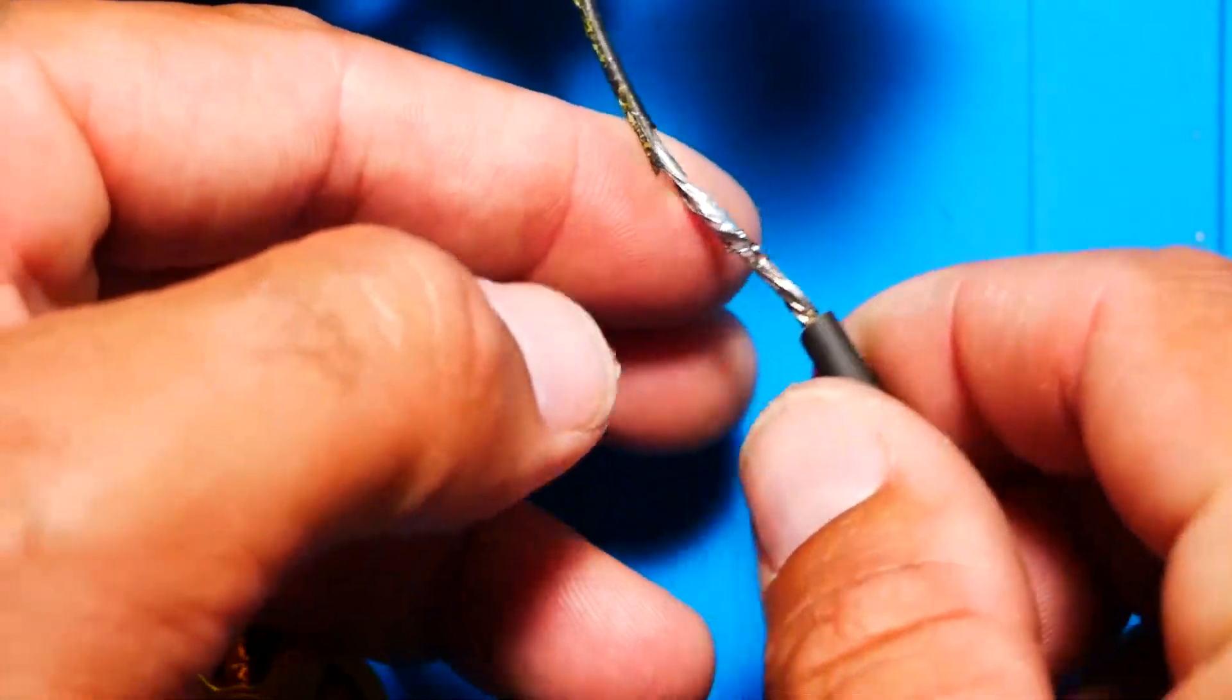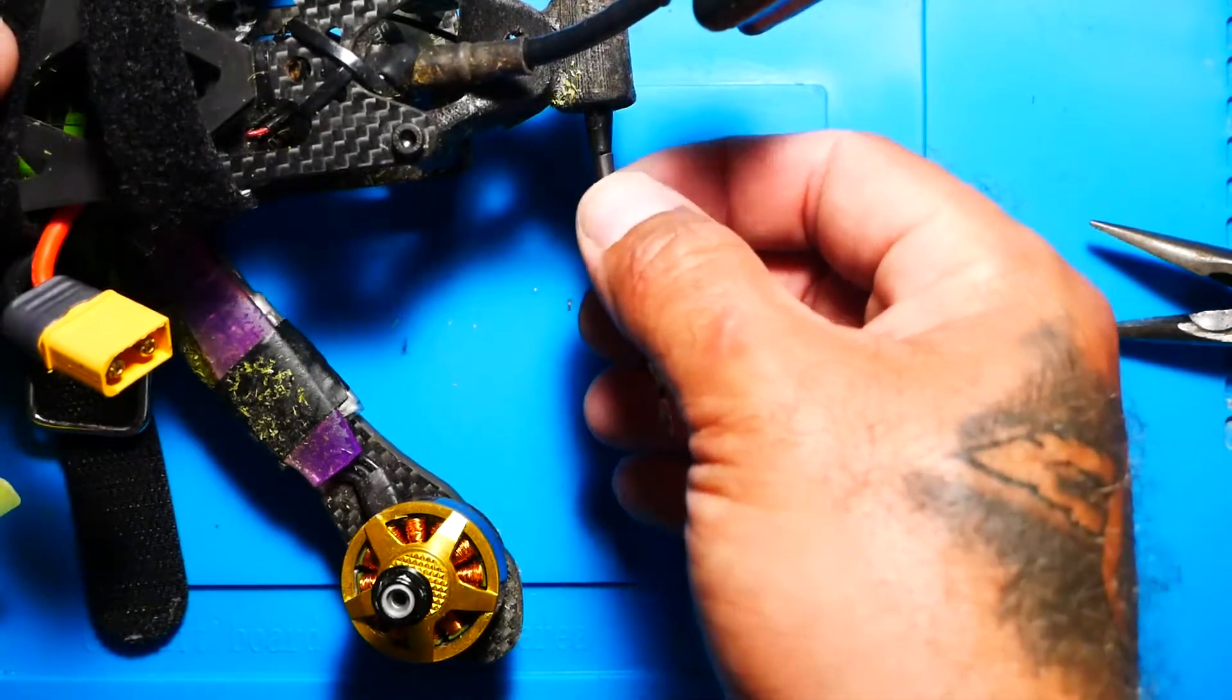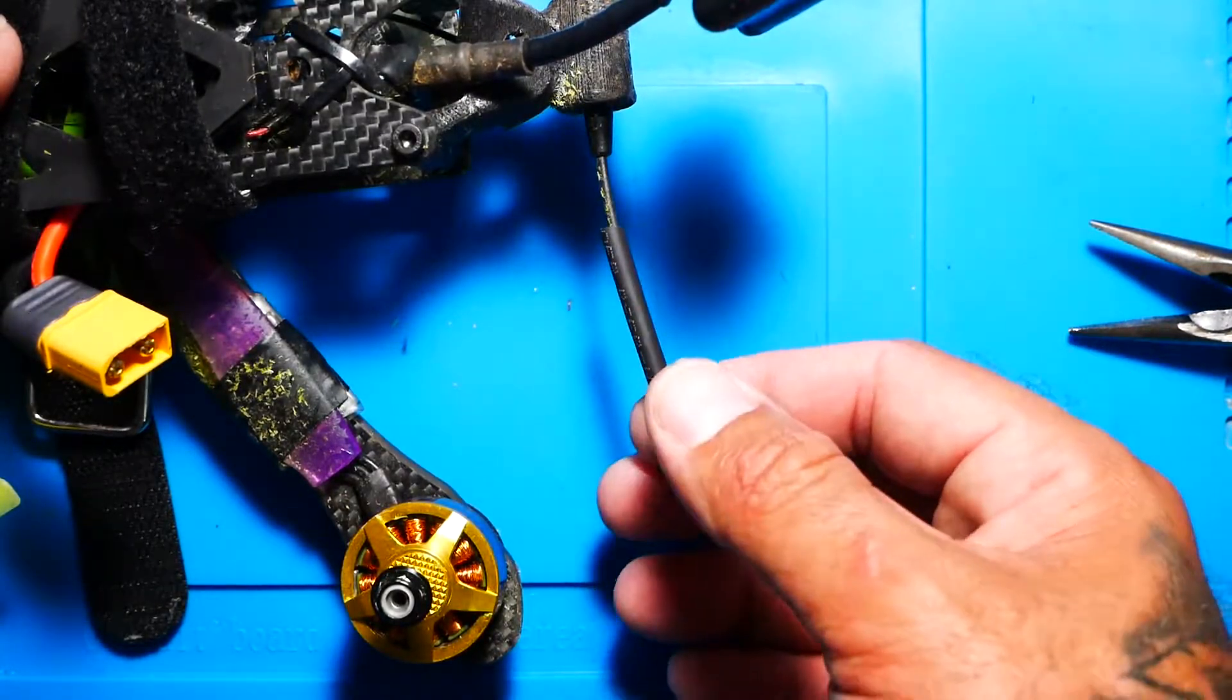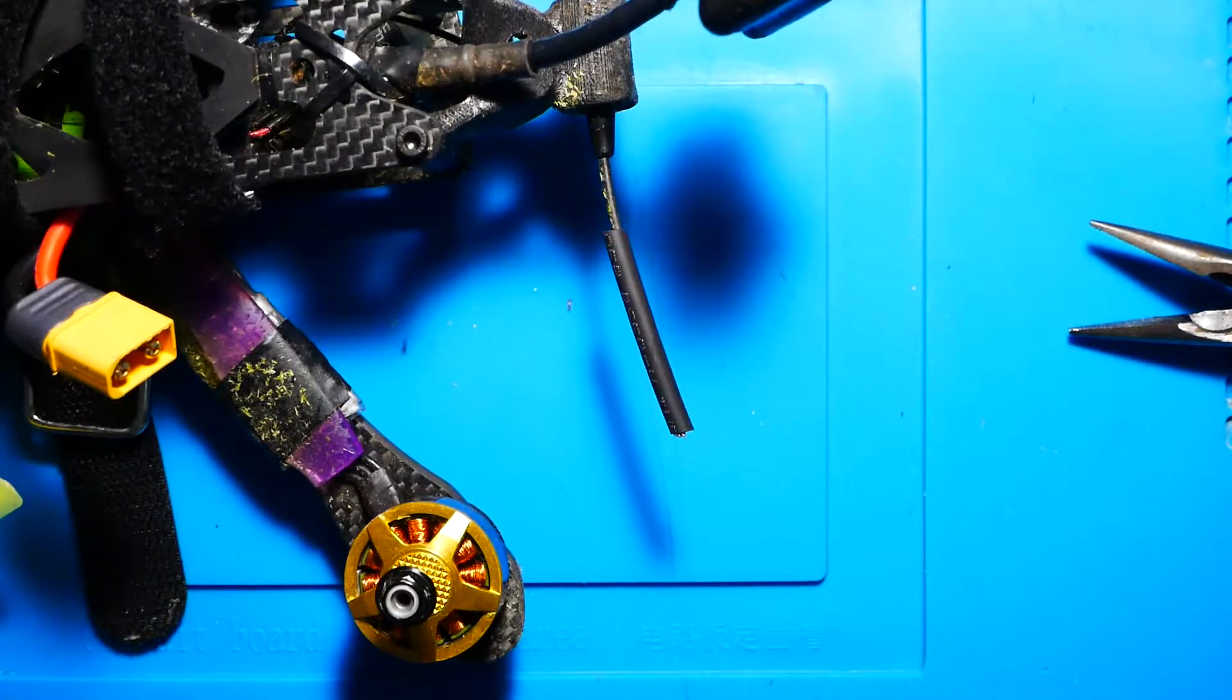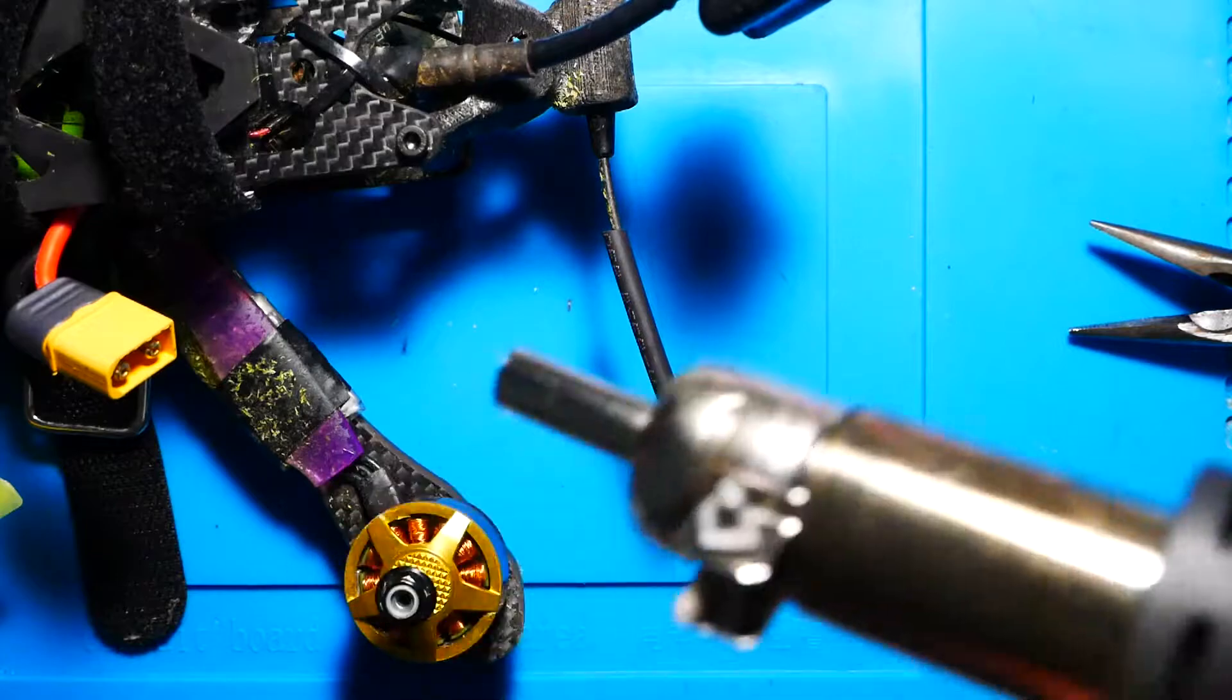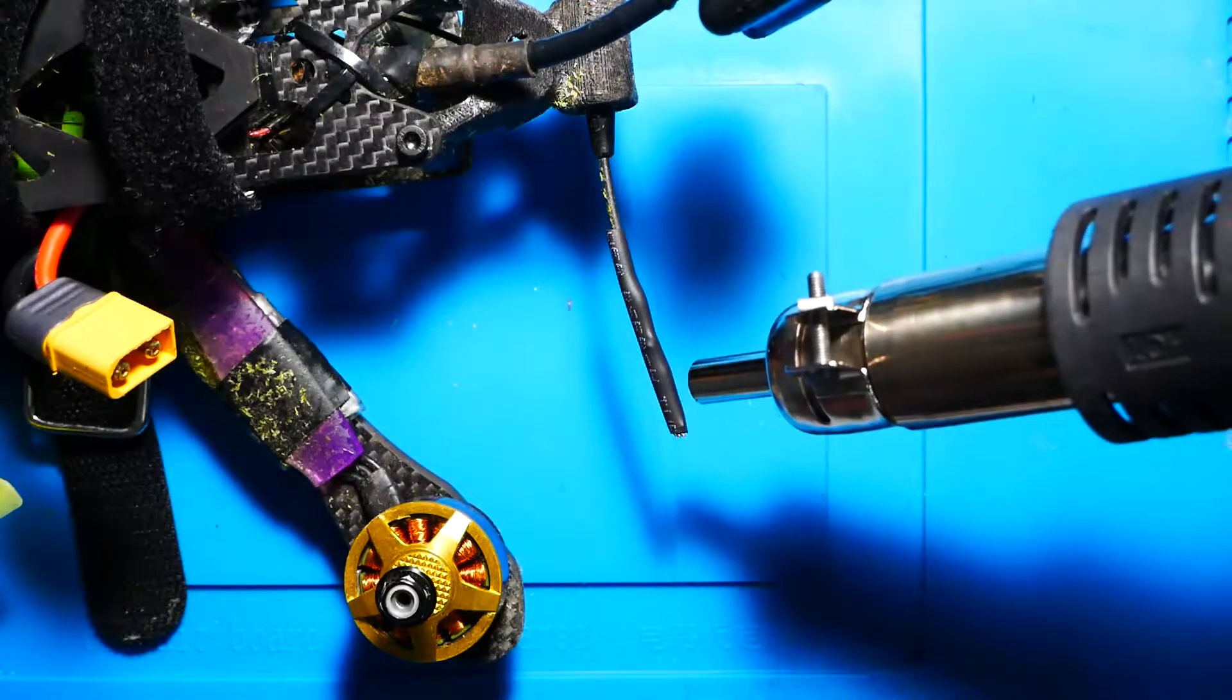Alright, go ahead and wiggle that on. Alright, we're going to go ahead and slide that over. You're welcome to do one here, one here, one here, whatever makes you happy. Me, I'm going to go right to the edge. That's all I need. And then go ahead and hit it with a little bit of heat. If you don't have a heat gun and all you have is a lighter, that'll work too.